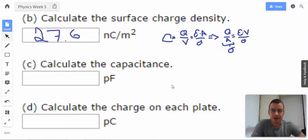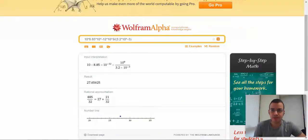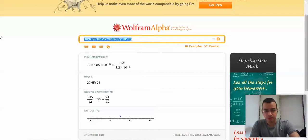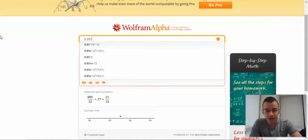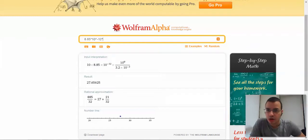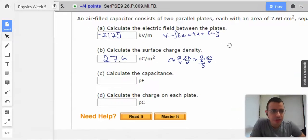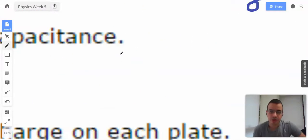Now we'll calculate the capacitance. We can use pretty much either formula we want here. Which one would be easiest? I'm going to do epsilon times area divided by distance. So 8.85 times 10 to the negative 12th, which is epsilon naught, times area, which they gave us, 7.6 centimeters squared.